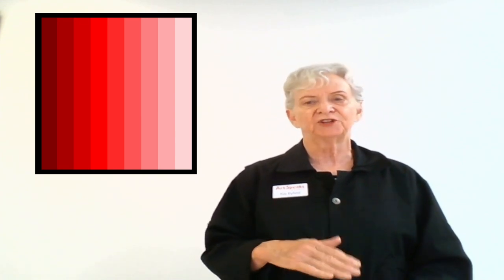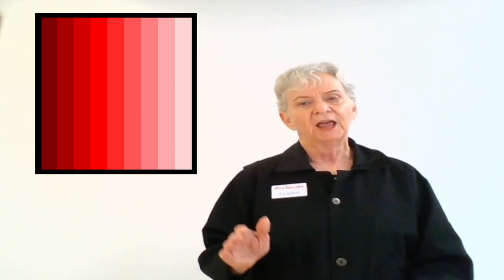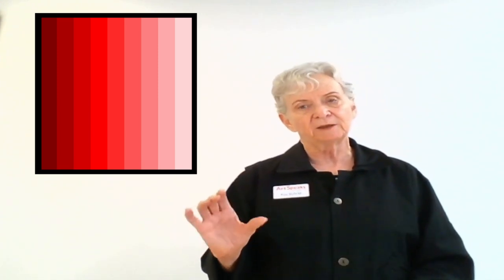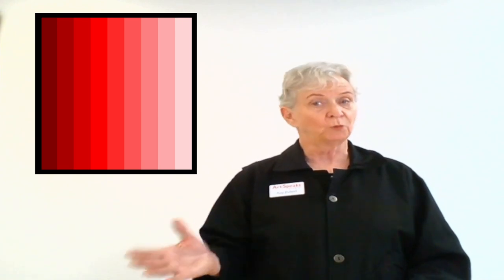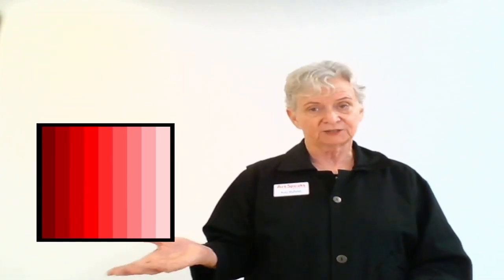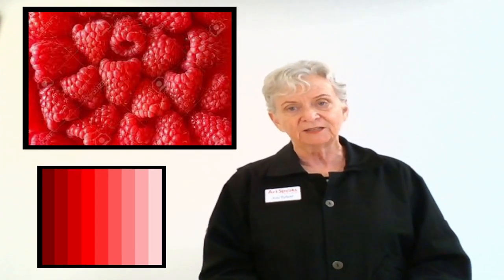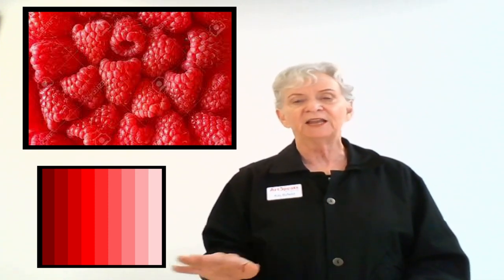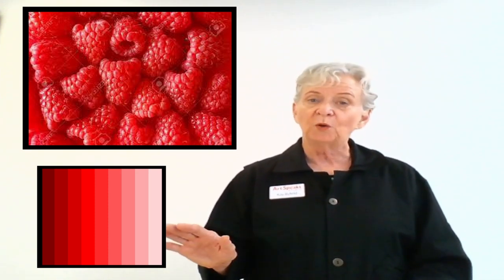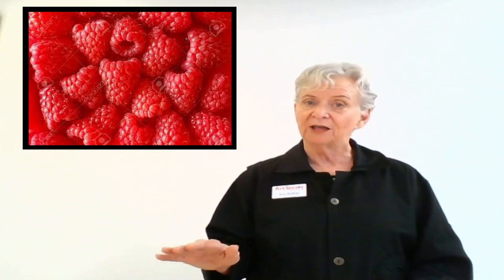Every color comes in a full range from the lightest version of it to the darkest version. But that range is lengthened or shortened depending upon what the color is. And we can make something read, we can understand it as we do in this photograph of the berries, even though we don't use any other color except one. It becomes a monochrome.